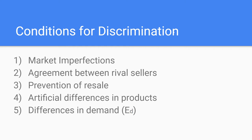There also may be artificial differences between the same goods for buyers who prefer to buy at a higher price. Finally, there needs to be differences in the elasticity of demand. Price can be charged low to a person with high elasticity of demand since they might not buy the good at a higher price, and a high price is charged to those with low elasticity of demand, as they will buy the good no matter how much the price changes.